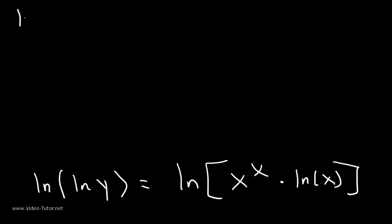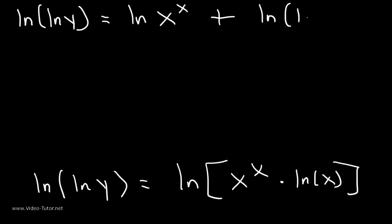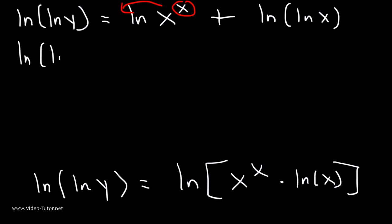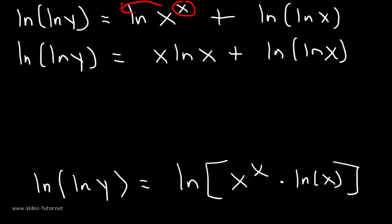So therefore, ln(ln(y)) is equal to ln(x^x) plus the natural log of ln(x). At this point, we can take this exponent and move it to the front. So we have ln(ln(y)) is equal to x·ln(x) plus the natural log of ln(x). Now that we no longer have any variables in the exponent position, we can differentiate both sides with respect to x.